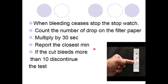Stop the stopwatch when the bleeding stops and count the number of drops on filter paper and multiply by 30. As you see here, there are three drops. First one is here, second one and third one.